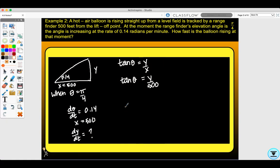Now I need to take the derivative with respect to time. The derivative of tangent is secant squared, so sec² θ dθ/dt equals 1/500 dy/dt. dy/dt is what I'm solving for, so I'll plug in.